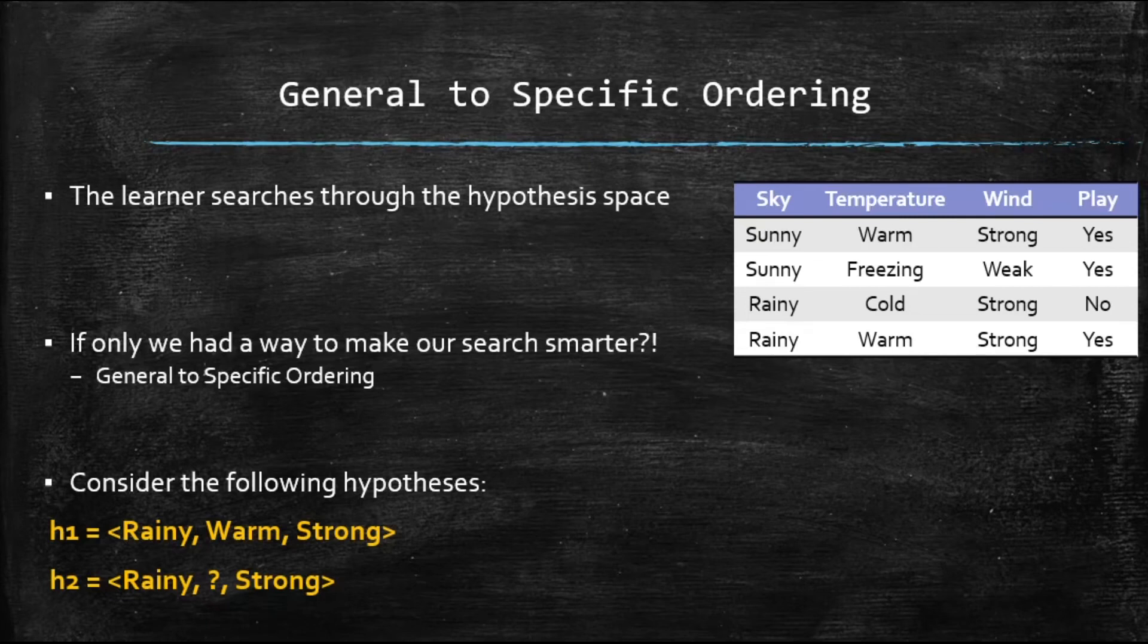Let's together find the training examples that would satisfy each one of these hypotheses. If we number them, number one, number two, number three, and number four. Which one of these examples would satisfy H1? Obviously, we got rainy, warm, strong, and the only one that has all three values is hypothesis number four.